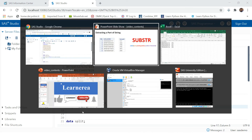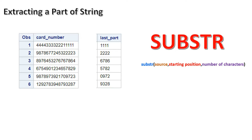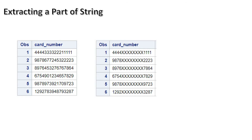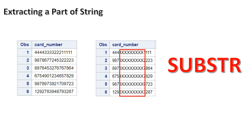Let's look at another example of SUBSTR. For example, you have a card number and when you get the statement you don't get the full credit card number. At many places the card numbers are printed with the initial four digits and the last four digits visible, but all the characters in between are masked — with any character or symbol. This thing you can achieve using SUBSTR.